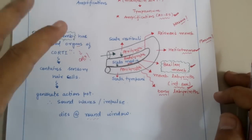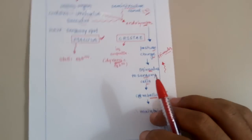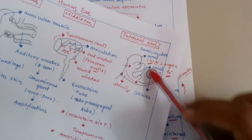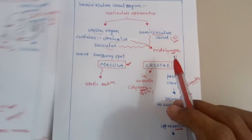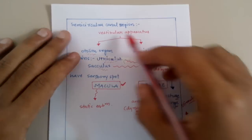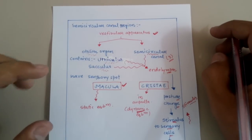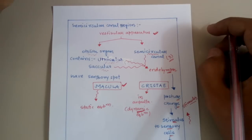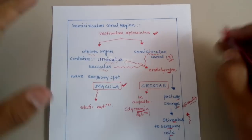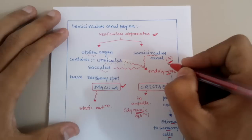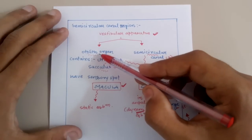If we want to go deeper, the internal ear has two regions: the semicircular canals region, and the region known as the vestibular apparatus. The vestibular apparatus is divided into two types of organs. One is the semicircular canals — three in number, present perpendicular or 90 degrees to each other, which we have already discussed — and the second one is the otolith organ.